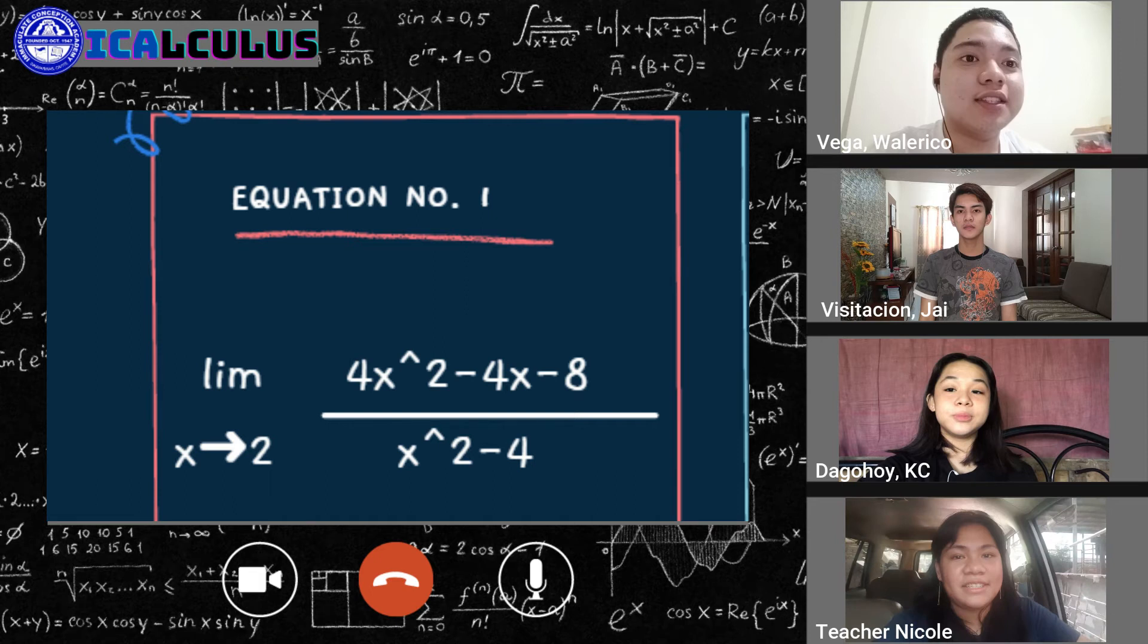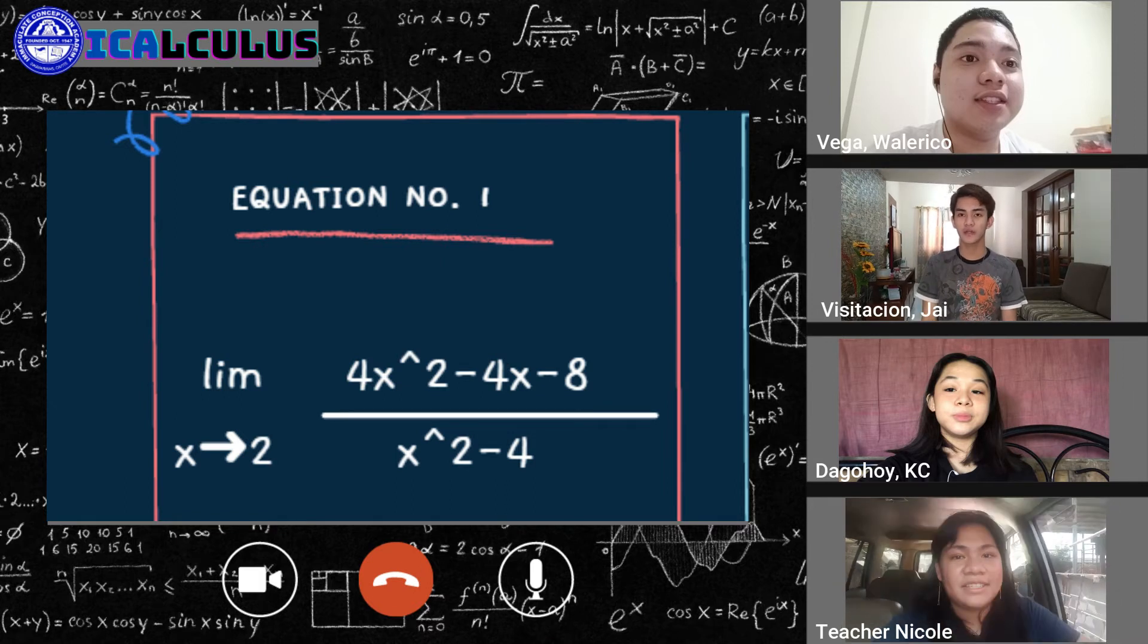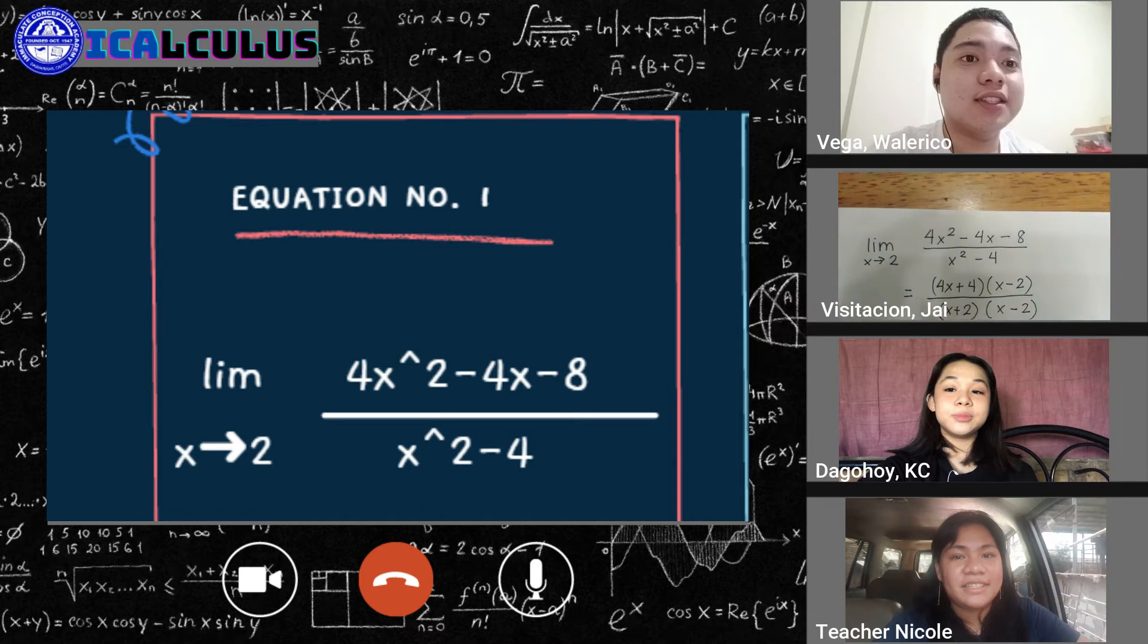I'm going to try the first example po. Yes, Jai. The equation that we have is 4x squared minus 4x minus 8 all over x squared minus 4 as x approaches 2. So the first thing we have to do is to simply substitute 2 to all the x variables. By plugging in the values and simplifying, the answer that we will get is 0 over 0 or indeterminate. But we can't take 0 over 0 as a valid answer. And so what we have to do is to find another way in order for us to find a different answer. So by using the factoring method.